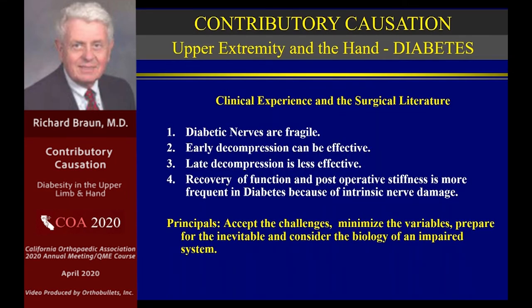Let's talk about some caveats based on clinical experience and surgical literature. Diabetic nerves are fragile — they go down faster, stay down longer, and don't get better as well. Early decompression can be effective; late decompression is less effective. Recovery of function and post-operative stiffness are much more frequent in diabetic patients because of intrinsic nerve damage. The principles for the working surgeon: accept the challenges, minimize the variables, prepare for the inevitable, and consider the biology of an impaired system.